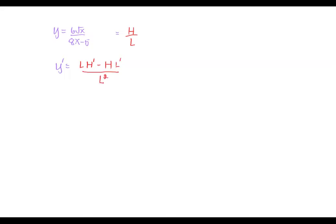On the prep note, we are going to identify the high function, which is 6 times square root x. The low function, which is the denominator, is 8x minus 5. The d high, or the derivative of the numerator, is the derivative of 6 times square root x.